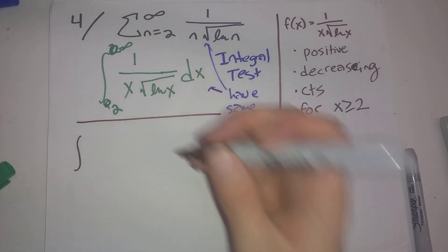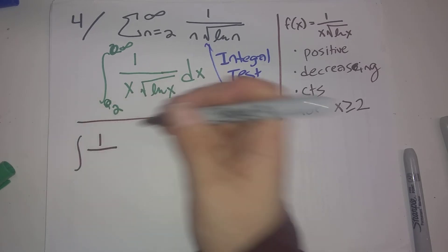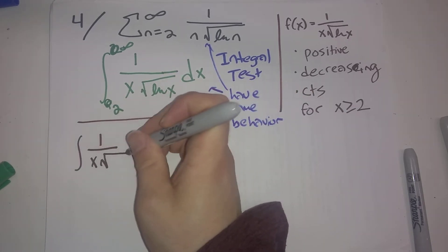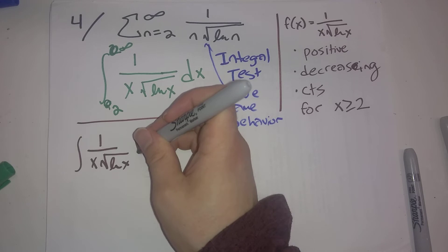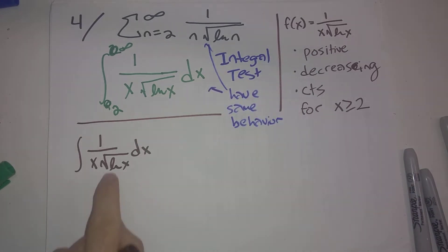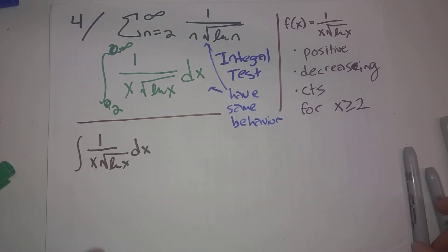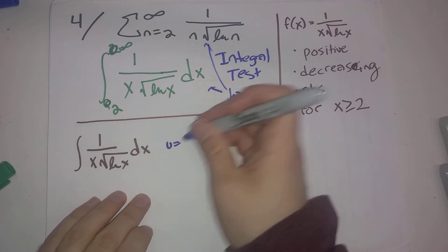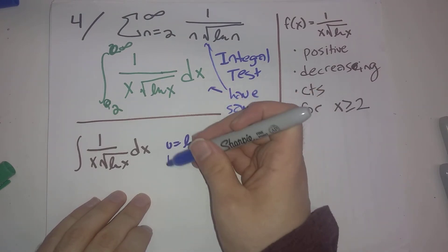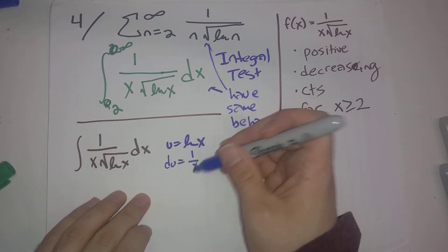I'm just going to look at the indefinite integral for the time being, find the anti-derivative, and I'll put in bounds later. I already gave away how we're going to attack this. Let's set u equals natural log of x, du is 1 over x dx.